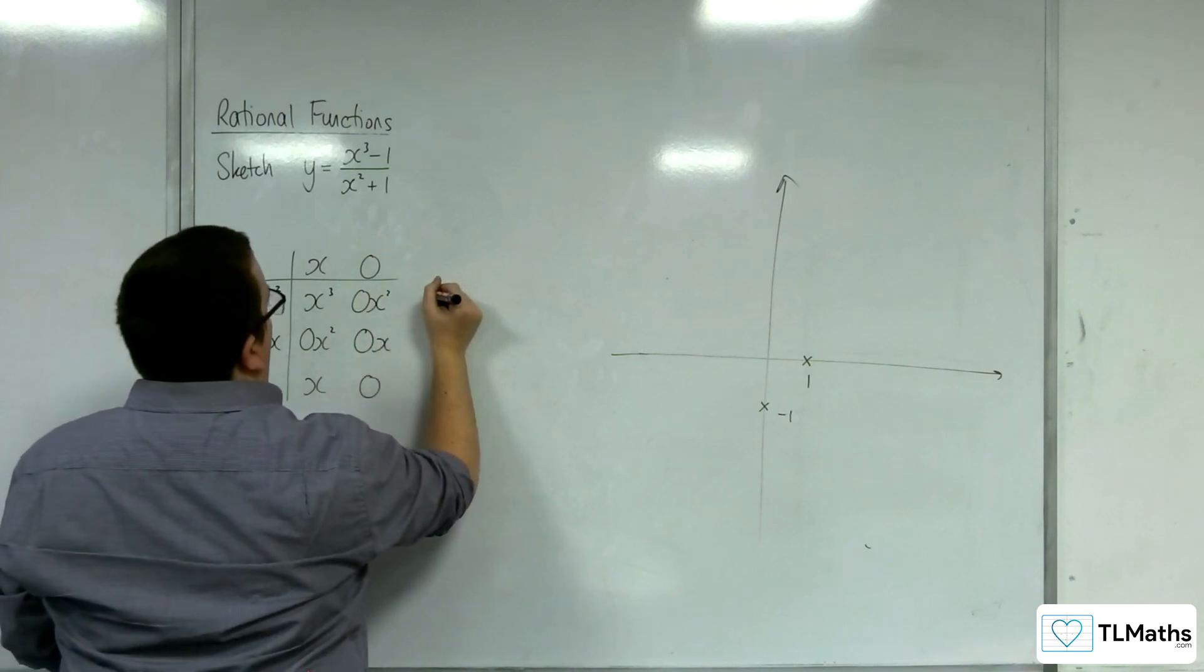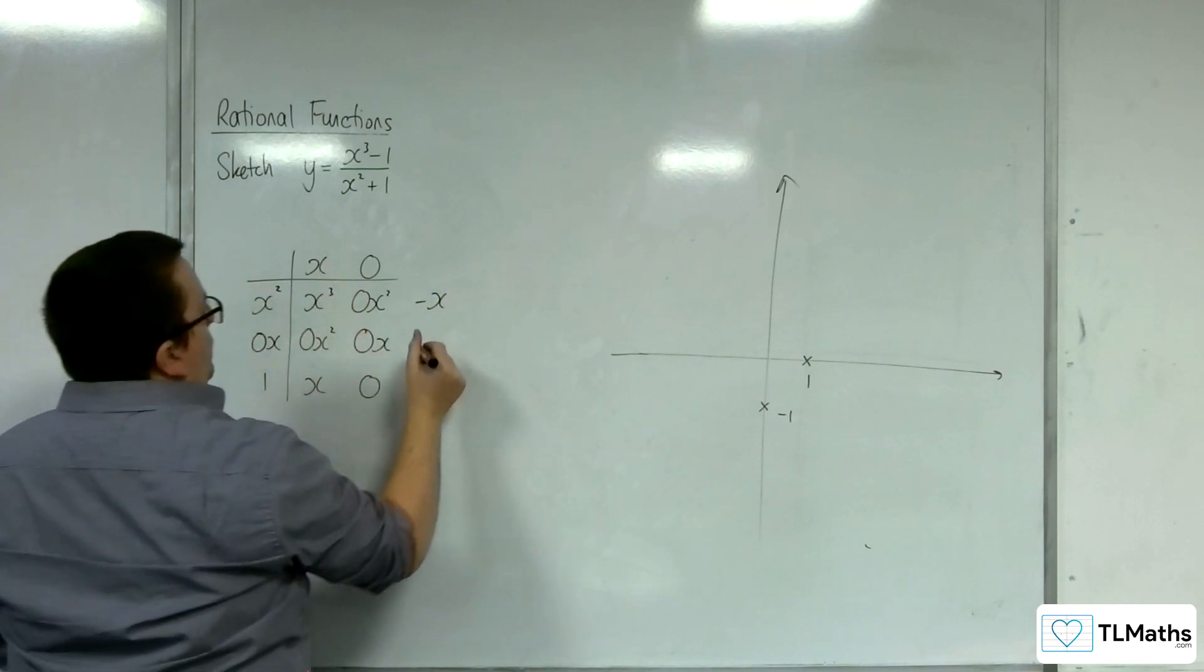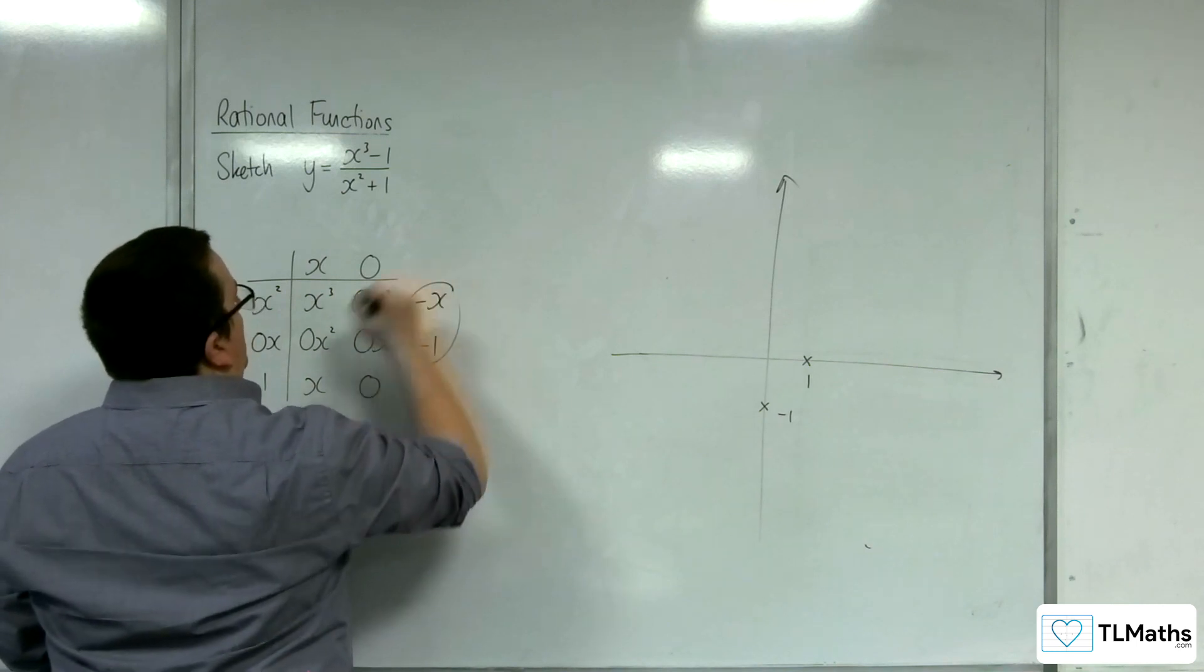We don't want any x's, so that'll be minus x in order to knock out the x's, and we want minus 1, and so that's my remainder.